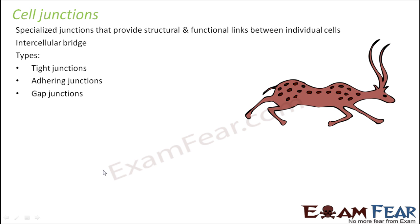While talking about epithelial tissue, one very important thing is that epithelial cells are very closely packed — there is no intercellular space between them. Because they act as a boundary, there can be no leakage, and to ensure that, there are cell junctions which connect the cells to each other. These junctions are called cell junctions.